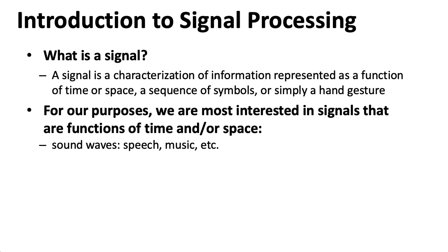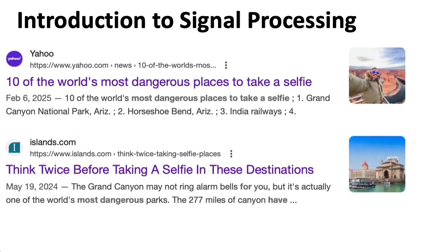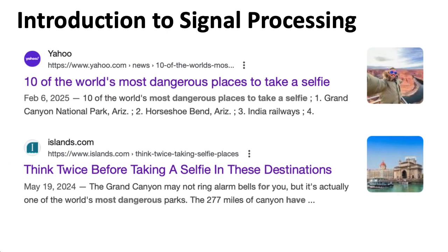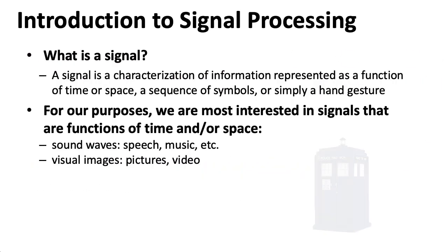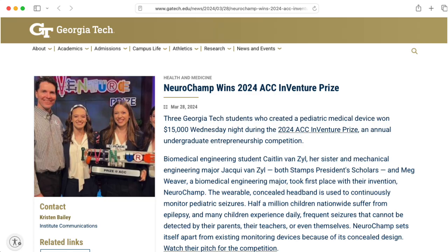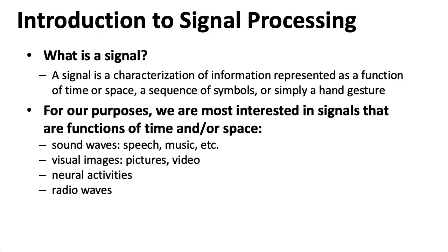Or you might have a function of space, such as the selfie you just took with your cell phone. In the case of video, you have a function of time and space. You could also talk about neural patterns — you might be trying to detect the onset of an epileptic seizure — or you might be thinking about radio waves. In all of these cases, in the real world, you have functions of a continuous time variable, or continuous space variables, or both.